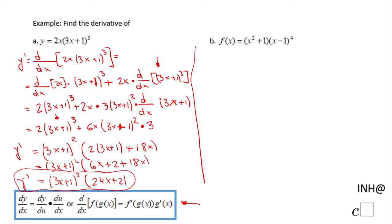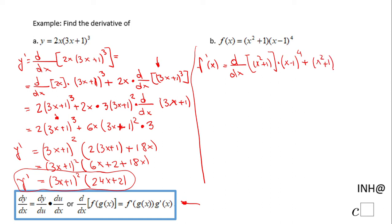Now let's move to part B. f prime of x is the derivative with respect to x of the entire expression. We apply the product rule: the derivative of the first function, x² + 1, times the second function (x − 1)⁴, plus keeping the first function x² + 1 times the derivative of the second function (x − 1) to the fourth power.